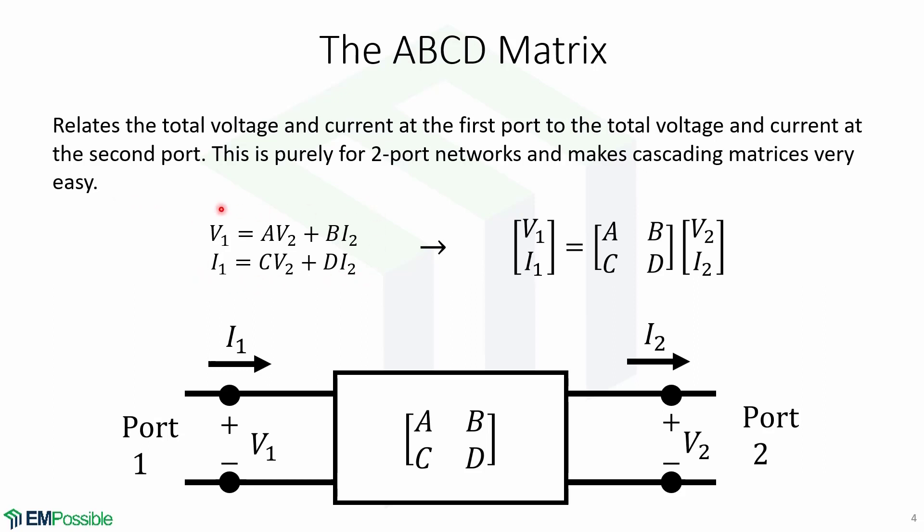Here is a pair of equations that contain the ABCD parameters where V1 equals AV2 plus BI2, I1 equals CV2 plus DI2. We can arrange this in matrix form as follows. And this is a schematic representation of the ABCD matrix.